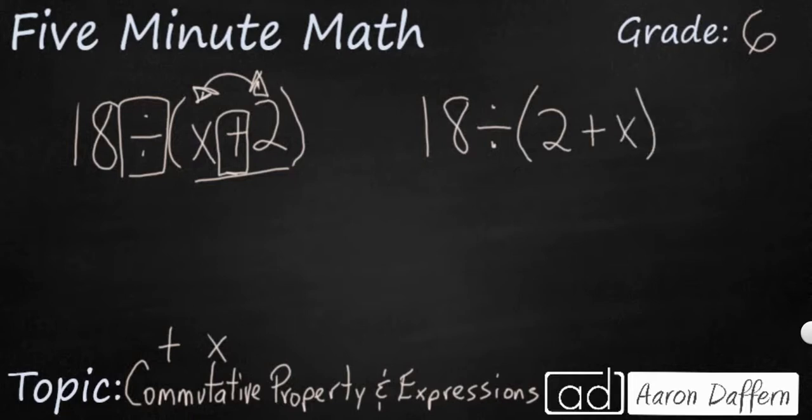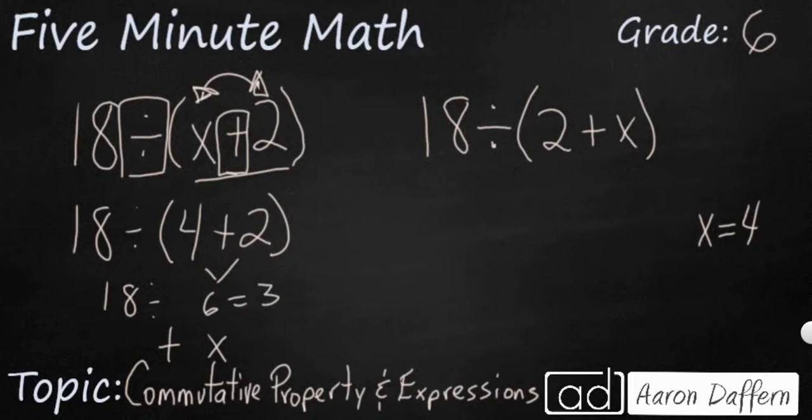How do we know? Well, let's test it out by replacing x with something. And let's just say x is going to be something that's going to be easy for us to use. Let's say x equals 4. So if we say x equals 4, then we're going to have 4 plus 2 over here. And that is going to simplify down to 6. So 18 divided by 6, that's going to equal 3. If we do the same thing over here, 18 divided by, now we have 2 plus 4. You notice that changing the addends doesn't really change the sum. And so it's going to be 18 divided by 6, and that's still going to equal 3.